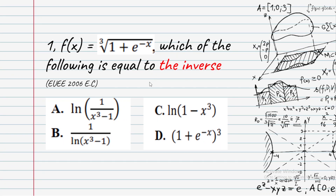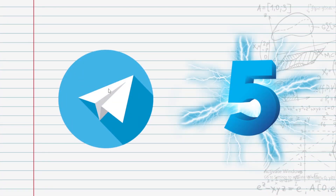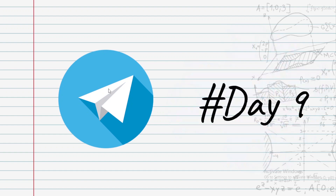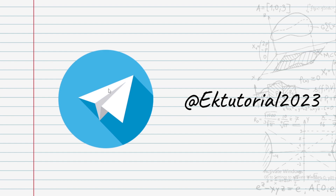The answer is option A: ln in the bracket 1 over (x cubed minus 1). This is the correct inverse of the function. Share your answer as a hashtag day 9 in the description or comments.